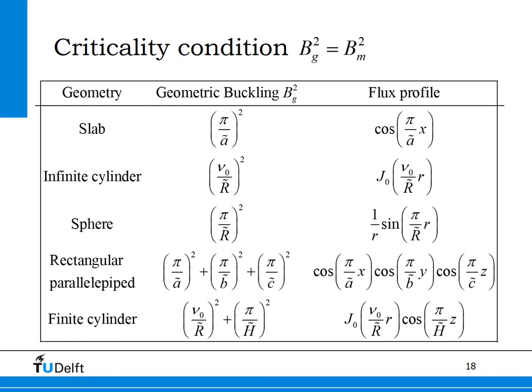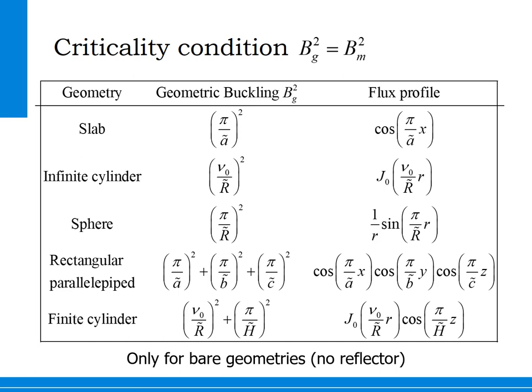The critical condition is valid for other geometries as well. A table gives some geometries together with the geometric buckling for each geometry and the flux profile. Note that this is only valid for bare geometries, meaning no reflector is attached to the reactor core.